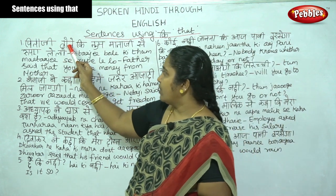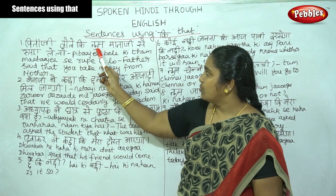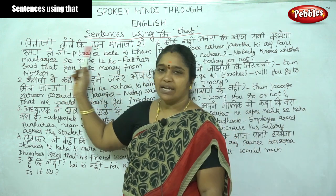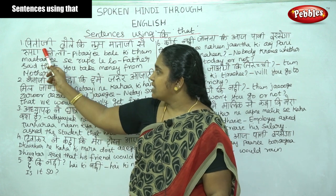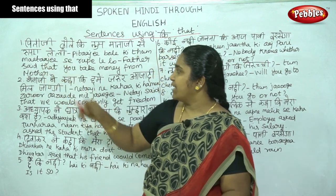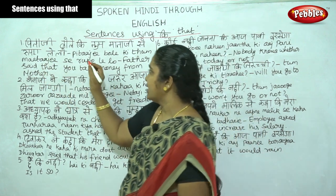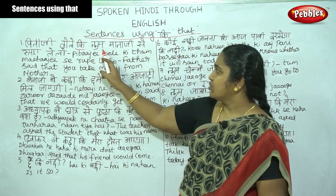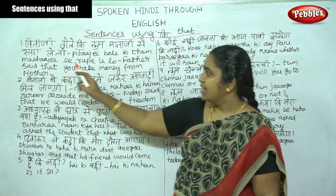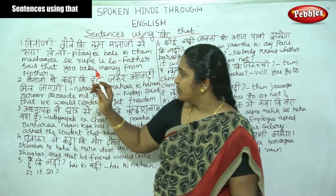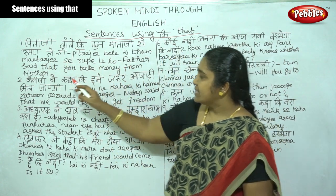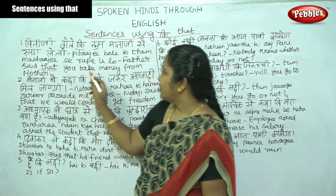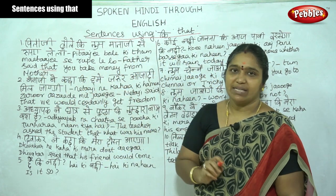Pita ji bole ki tum mataji se rupiye lelo. Here we can see the conjunction 'ki'. Father said that you take money from mother.